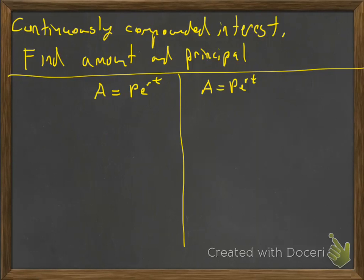And the P and the E to the RT, they're attached by multiplication. So to undo that, we'll just divide both sides by E to the RT. So your amount divided by E to the RT, and that's going to be your principal. And that'd be like our present value, kind of like with the compounded interest.